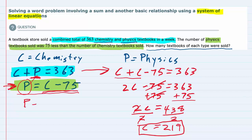Now that we know the value of C, I can just rewrite that as P equals C, which is 219 now that we found it, minus 75. So P equals 219 minus 75, which is 144. So the number of physics books is 144, number of chemistry books 219.